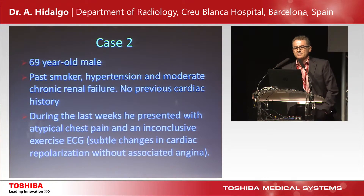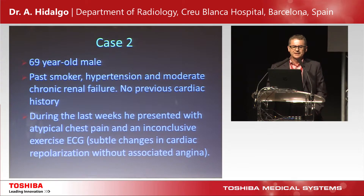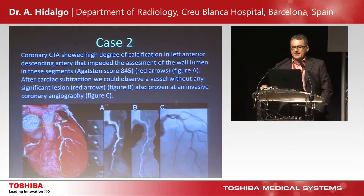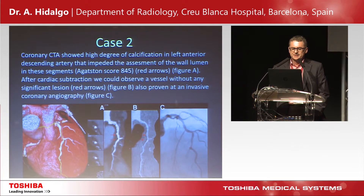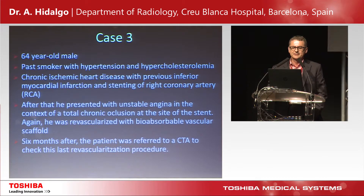The second case is a past smoker with cardiovascular risk factors who presented during the last week with atypical chest pain and an inconclusive exercise ECG — a situation that is quite frequent in real practice. When you perform the coronary CTA and apply the subtraction technique, you can see a plaque that could be difficult to evaluate. After subtraction, there is a good correlation with the invasive angiography, showing no significant lesions.